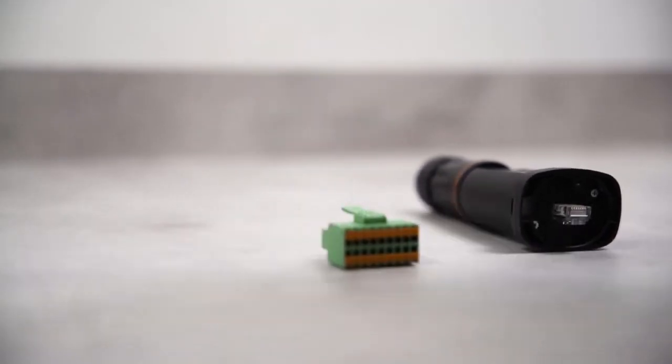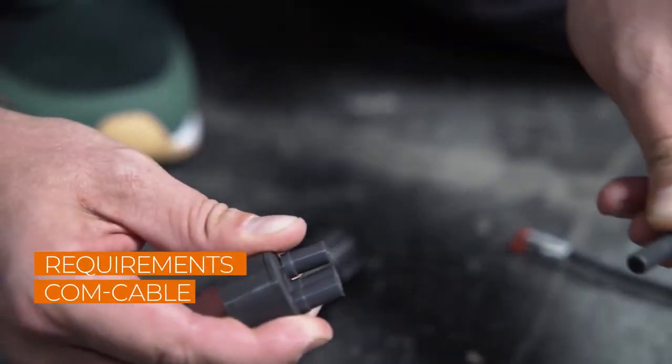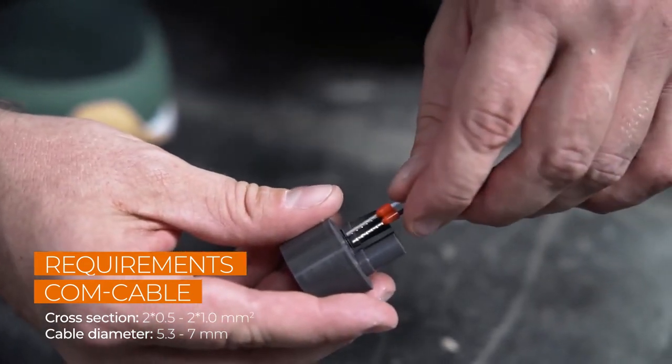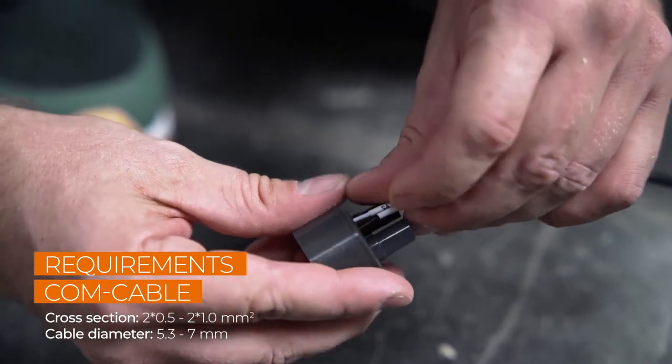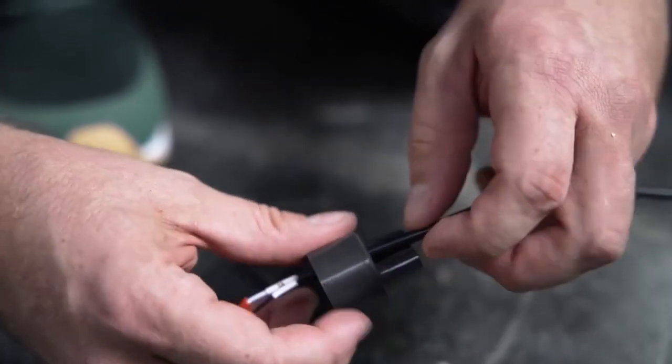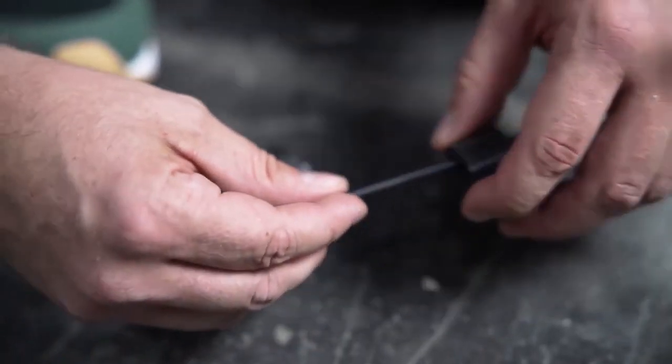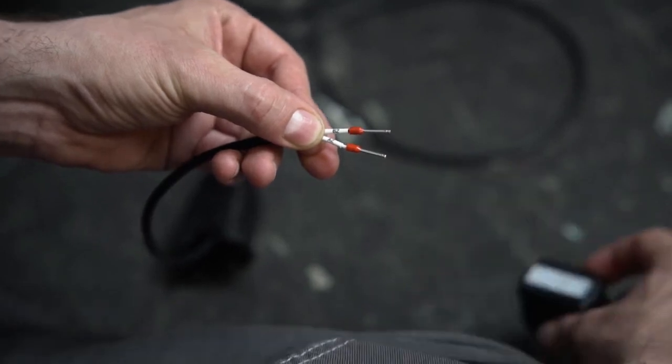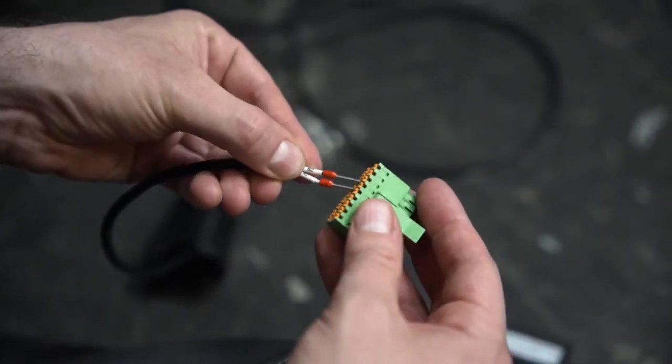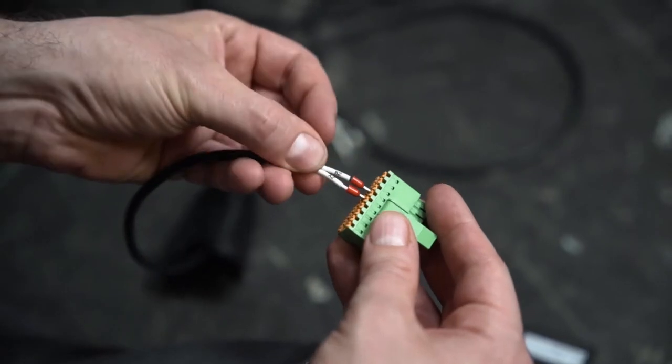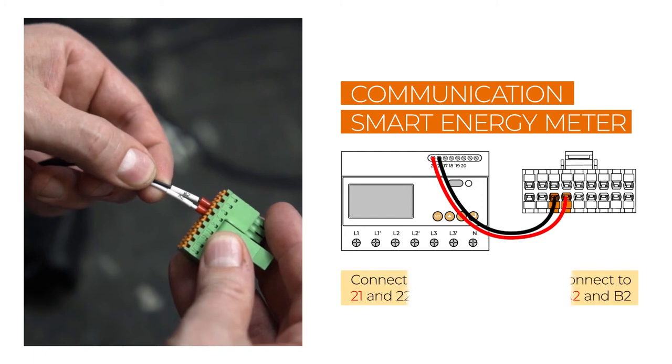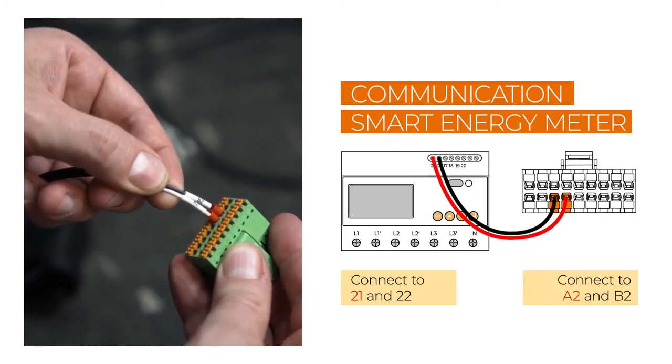In the next step, we will set up the communication port. Via this port, you can connect the smart energy meter or the communication cable for daisy chain mode. Let's start with the energy meter, which is needed for the feed-in power function. Remove approximately 4 to 5 cm of the cable sheath of the communication cables. Then strip approximately 7 to 10 mm off the inner cables. If necessary, you may have to fit the cables with end sleeves before you push them into the plug.